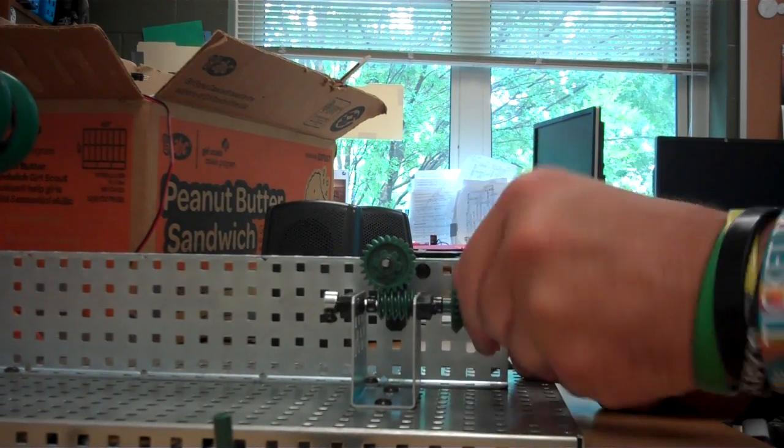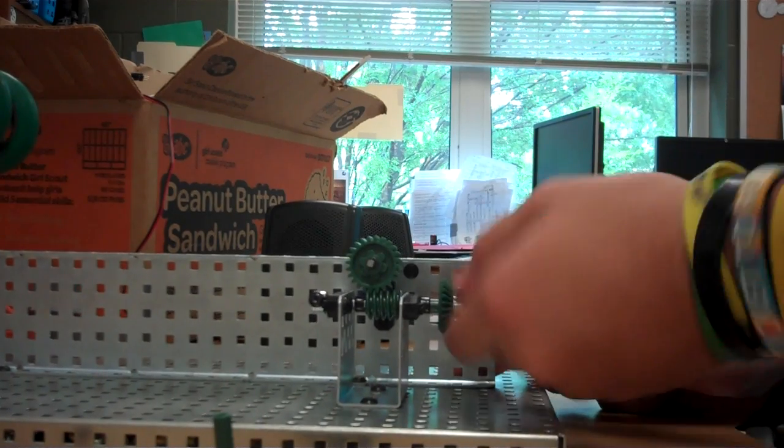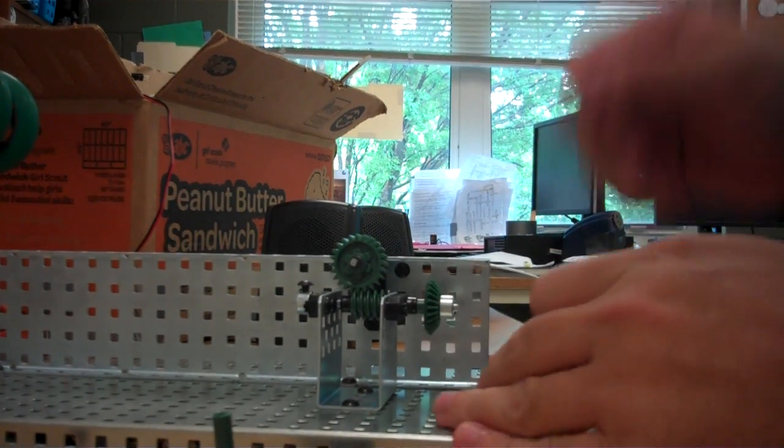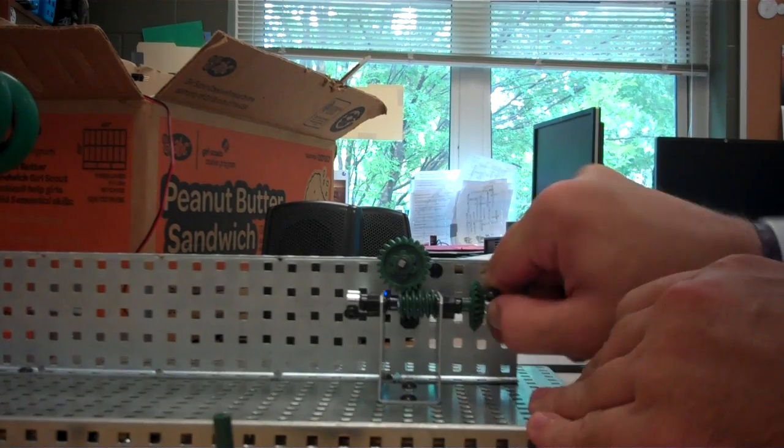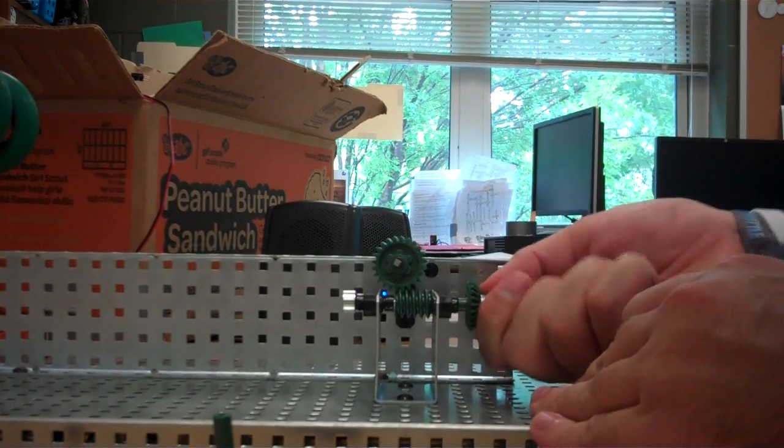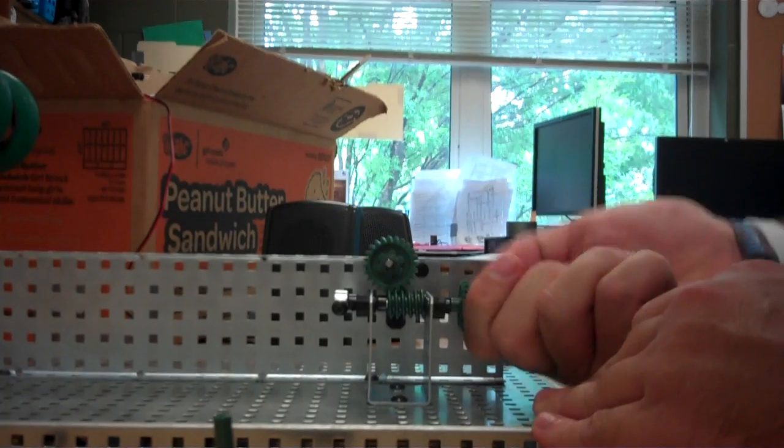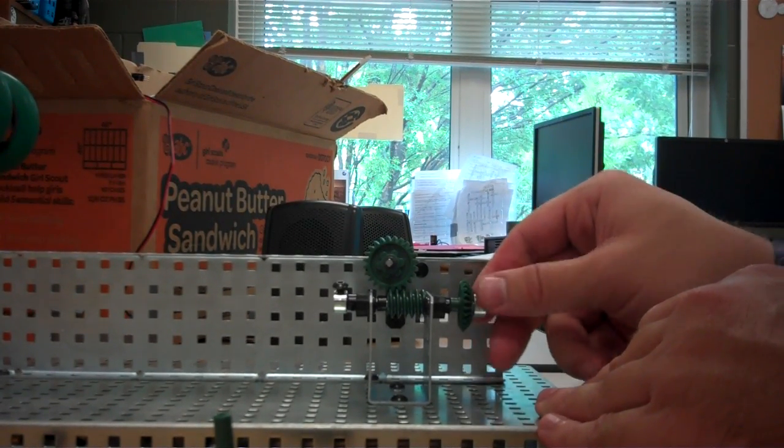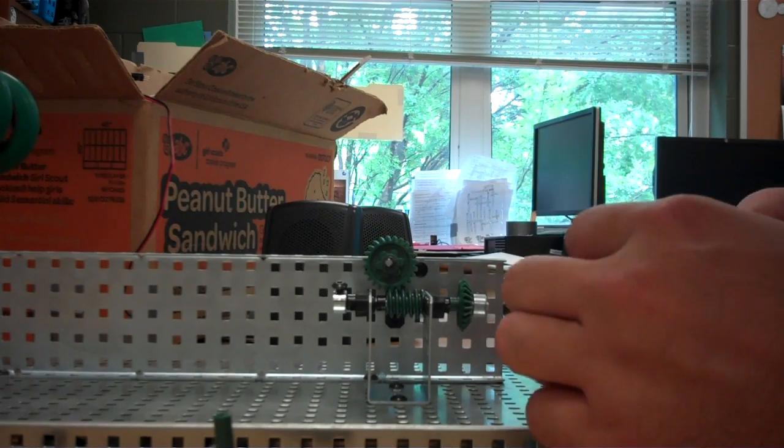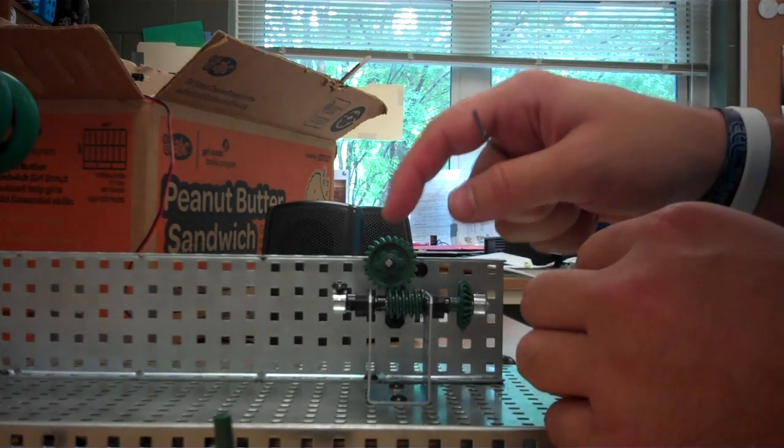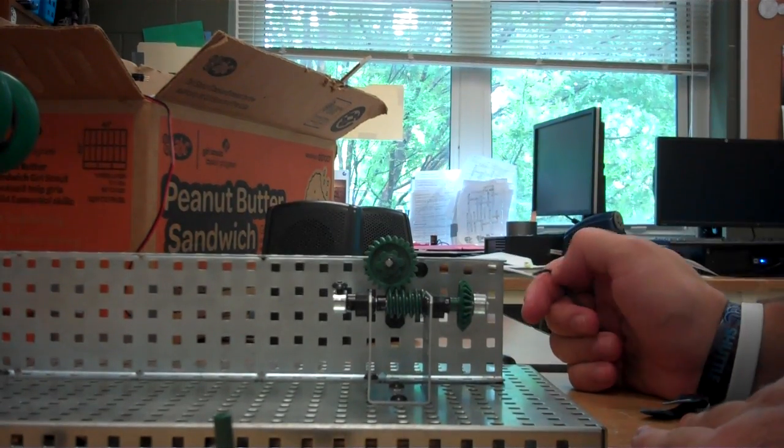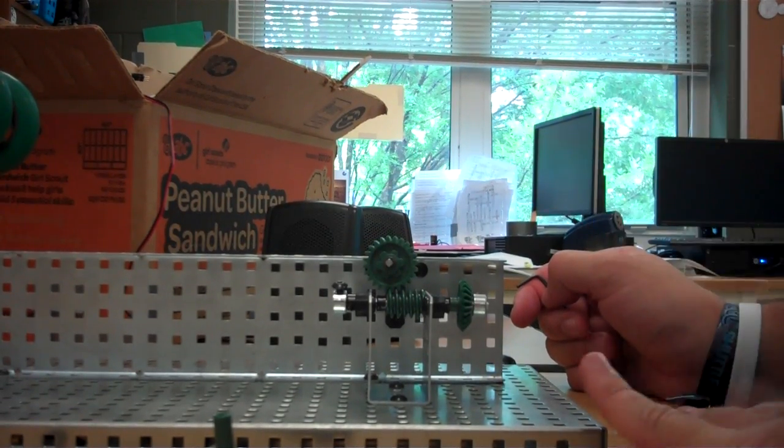All right, so a little worm and wheel there. Now you can see that this has a high amount of torque. If you turn this, that's a little difficult to turn. And with that, the high amount there is spinning that very slowly. So it creates a high torque and low speed.